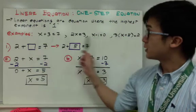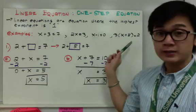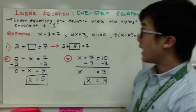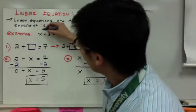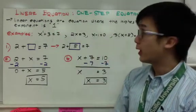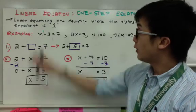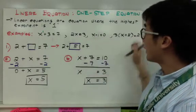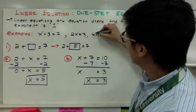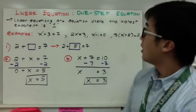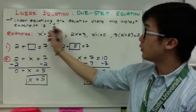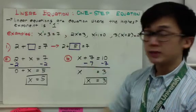Notice that all the equations in these examples have the highest exponent of 1, but you don't see it, because in algebra we don't usually write the exponent when it is 1. So all of these are linear equations because the highest exponent of your variable or term is 1.